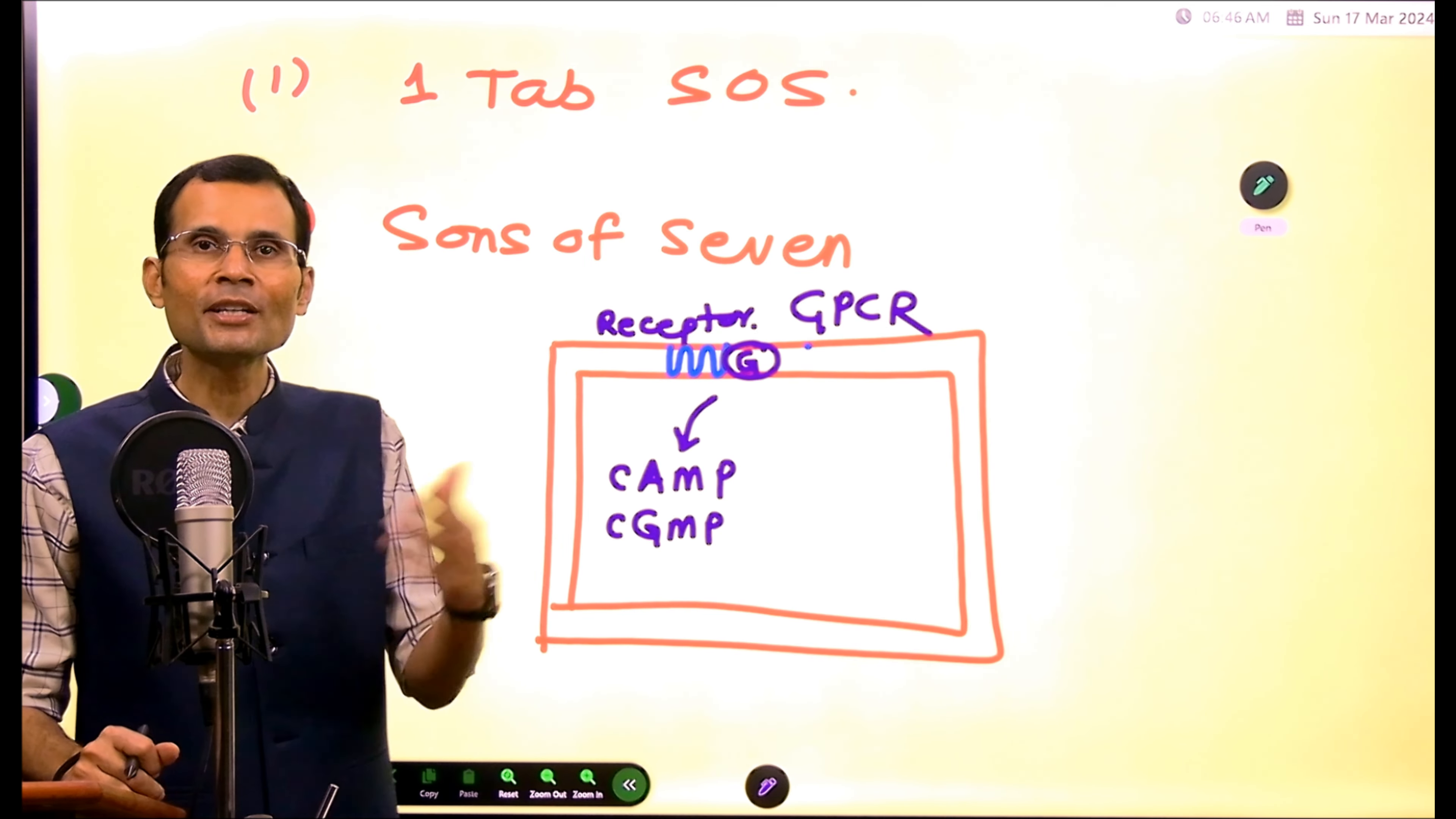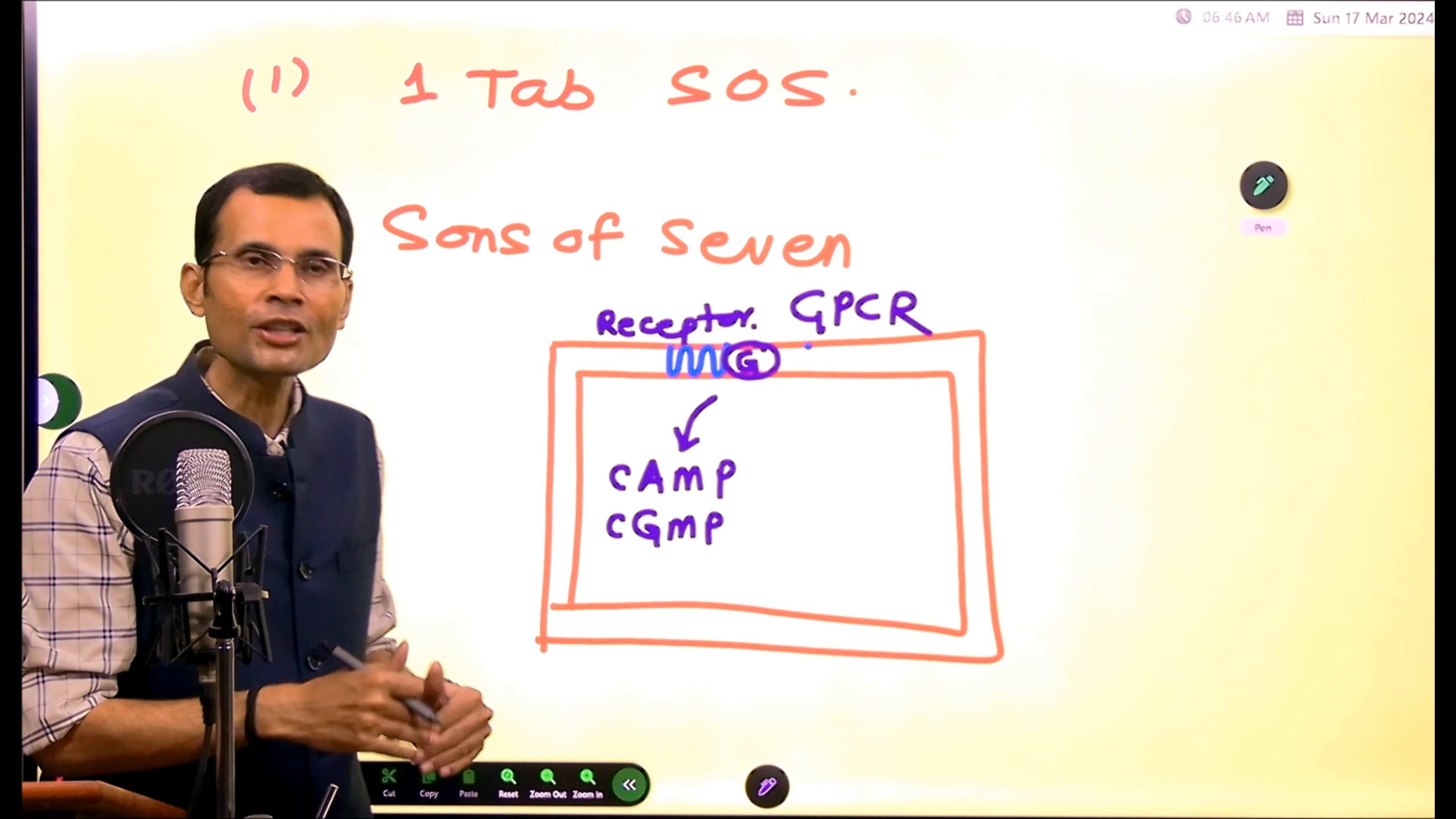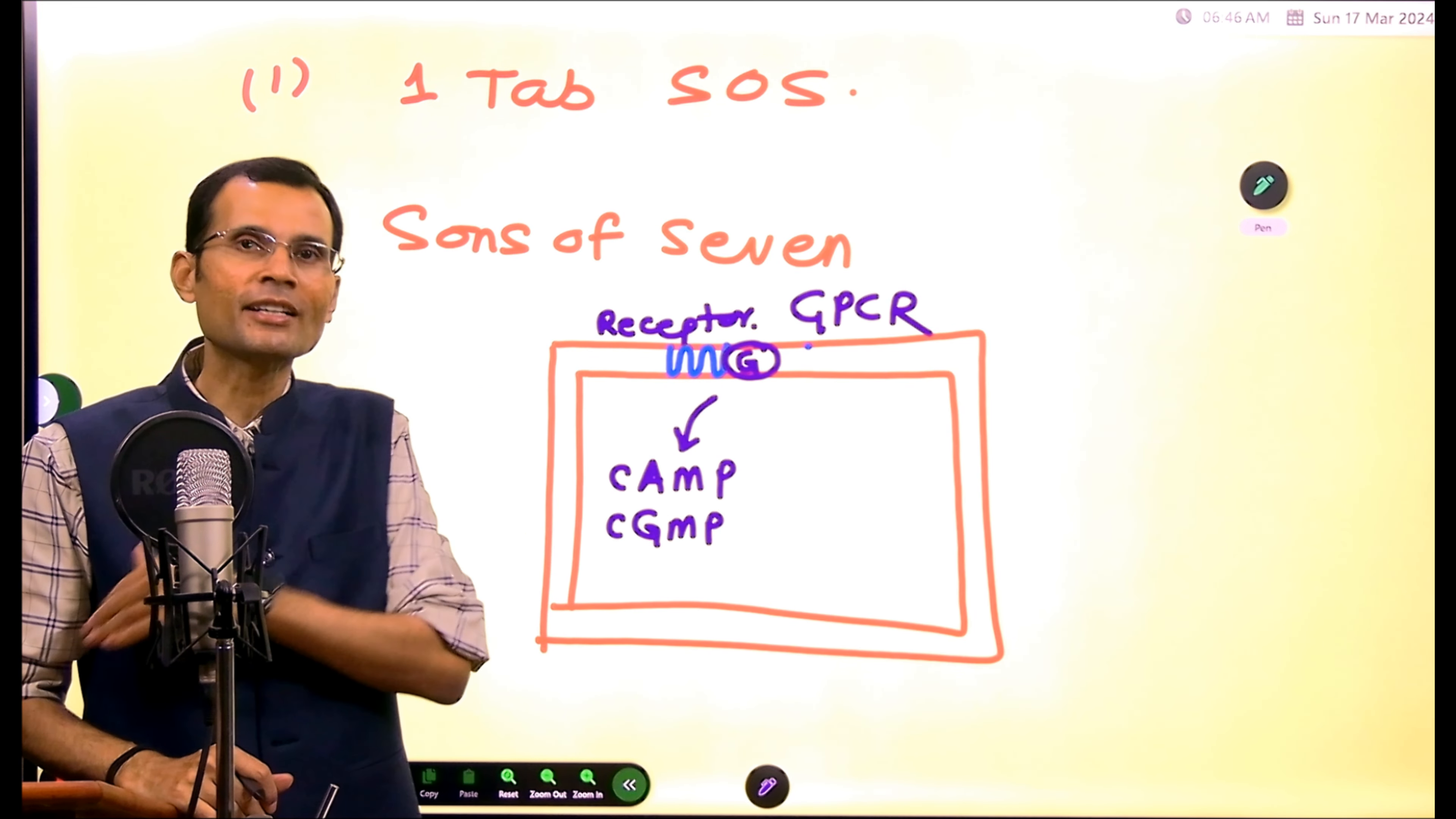The seventh being seven transmembrane segments of the receptor from which these products have been generated inside the target cell. So that's SOS.